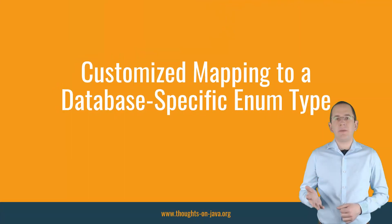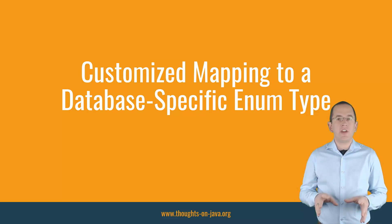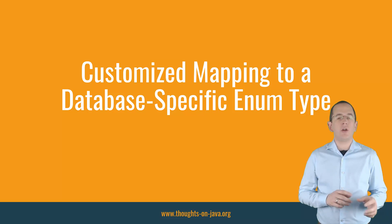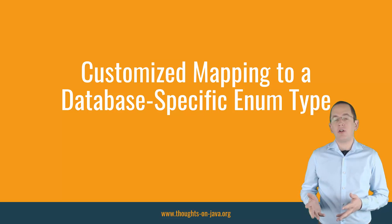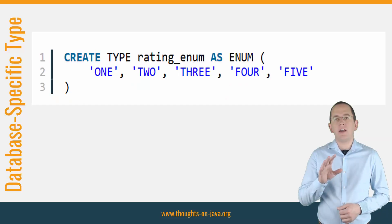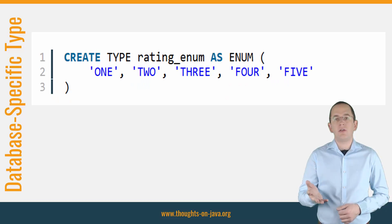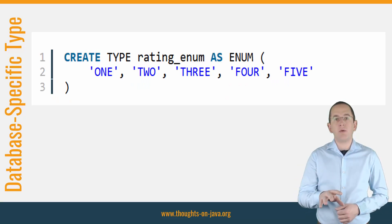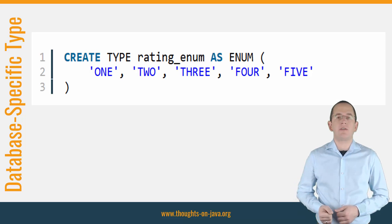Some databases, like PostgreSQL, offer custom data types to store enumerations. These data types are similar to the enum type that we know in Java. They define a set of valid values that can be stored in the database column, like you see in this code here. In the code, I use PostgreSQL's enum type, but you can use the same approach to support similar types supported by other DBMS.